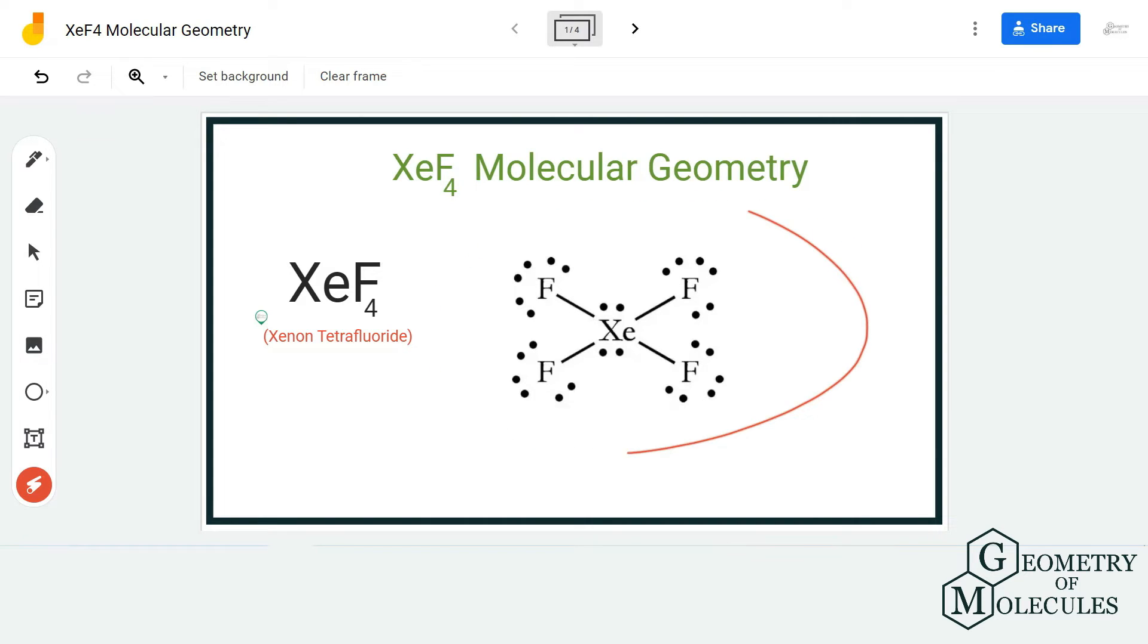Here is the Lewis structure of XeF4, in which xenon is in the center and it is forming single bonds with all four fluorine atoms. Apart from that, there are two lone pairs of electrons on the central atom.